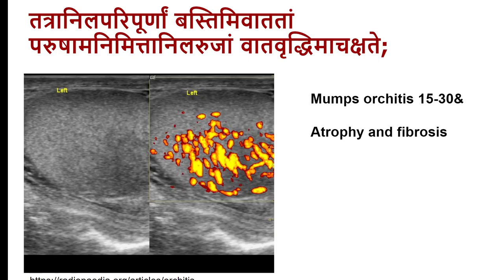Acute pain in the scrotal area is seen in mumps-induced orchitis. Orchitis is an inflammatory pathology of the scrotum, of viral or bacterial origin. Mumps commonly causes salivary gland involvement first, and in about 30% of mumps patients, orchitis develops. Of those, 15–30% end up with atrophy and fibrosis, making mumps a cause of reduced fertility, reduced sperm count, or azoospermia.